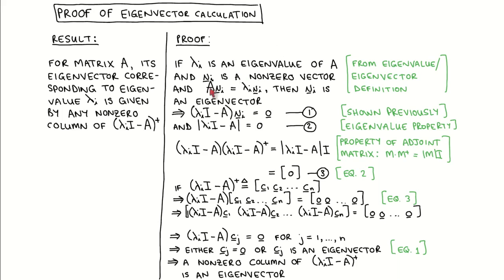To recap, if this equation holds for matrix A, non-zero vector V I and scalar lambda I, then lambda I is an eigenvalue of A and V I is the associated eigenvector. We can rewrite this equation as matrix lambda I times I minus A times vector V I equal to the zero vector, which we have done in a previous video.